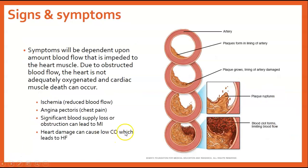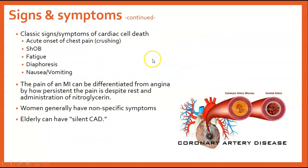Signs and symptoms depend on the amount of blood flow being impeded to the heart muscle. Due to obstructive blood flow, the heart can't get adequately oxygenated, and cardiac muscle death can occur. Key terminology: ischemia is reduced blood flow; angina pectoris is chest pain resulting from ischemia to the heart. Significant blood supply loss or obstruction can lead to myocardial infarction or heart attack. Heart damage can also cause low cardiac output, which leads to heart failure. Classic signs with cardiac cell death include acute onset chest pain described as crushing, shortness of breath, fatigue, diaphoresis, nausea, and vomiting.